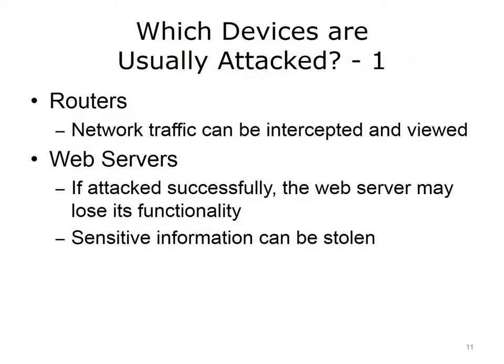In considering security, it is important to ask which devices are usually attacked. Routers are particularly vulnerable, and routers are everywhere. Routers send traffic from private networks to the internet and from the internet to private networks. Individuals have routers in their home networks, most businesses use routers, and internet service providers, or ISPs, use routers. If a hacker can successfully attack a router, all network traffic going through that router can be intercepted and viewed.